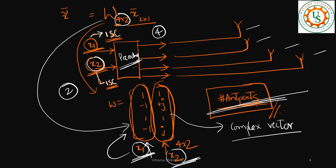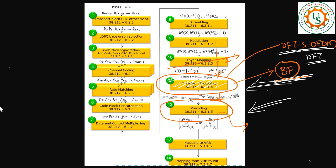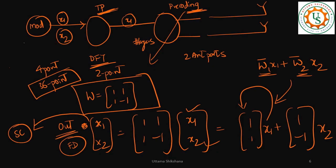With that background, let us get into the transform pre-coding block. In the signal processing chain, the transform pre-coding block is at the 11th stage. Some kind of beamforming is also happening here. This block is also known as the DFT-s-OFDM block, where the DFT is applied. As per the 3GPP spec, whenever the transform pre-coding block is enabled, the number of layers must equal 1, so the layer mapping block is bypassed. The flow goes directly from modulation to transform pre-coding, then to the pre-coding block, and then to the physical antennas.